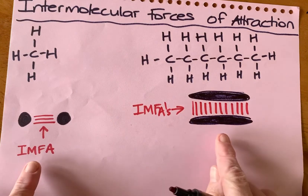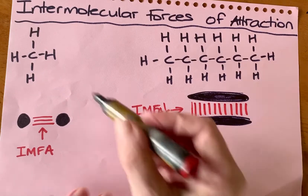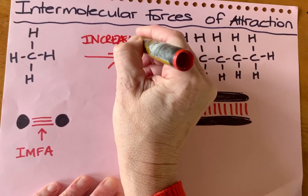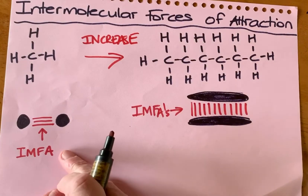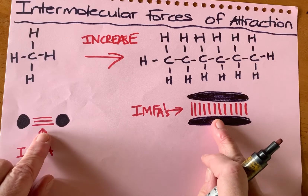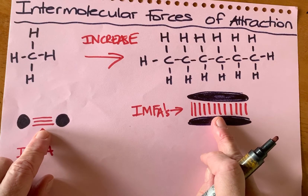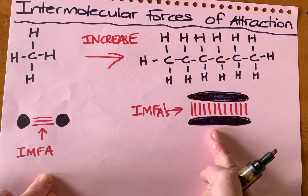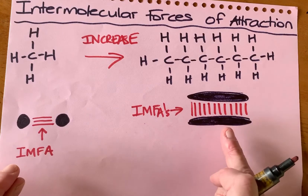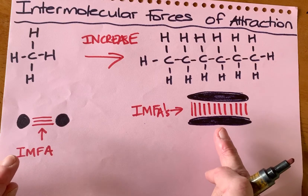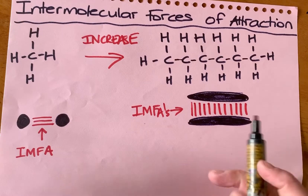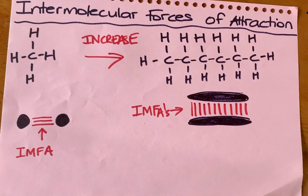So this explains why when you increase the size of the alkane, you increase the number of intermolecular forces of attraction — or the strength of them — and therefore the boiling point increases. The reason is that it requires more energy to either weaken those bonds if you're talking about a change from solid to liquid, or to break them if you're talking about a boiling point.